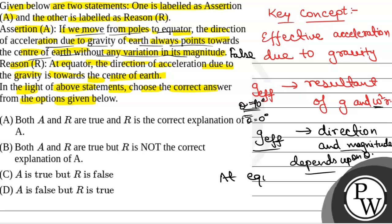Now at equator, theta is equal to 0 degree, so effective acceleration is radially inwards. So at equator, the direction of acceleration due to gravity is towards the centre of earth. This is a true statement.